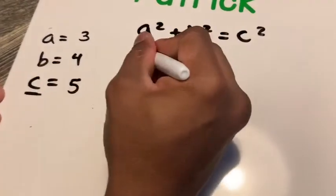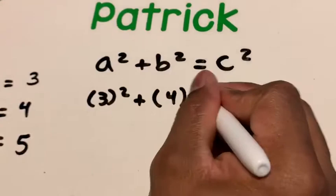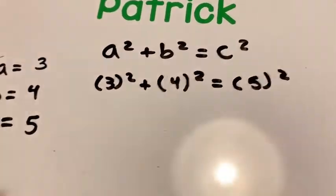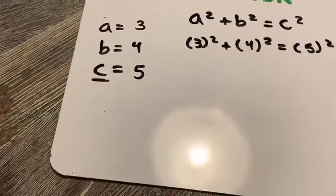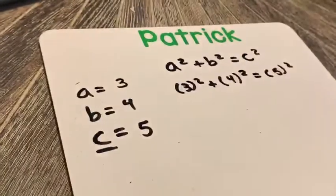So when we substitute those in, we get three squared plus four squared. Sorry, my dog is going crazy. It was five squared. I got to switch in video and teach.